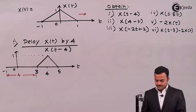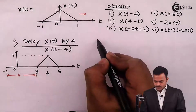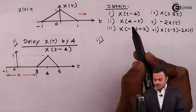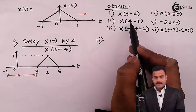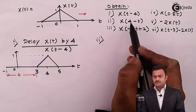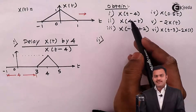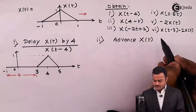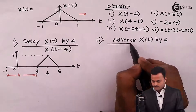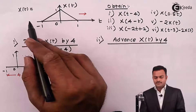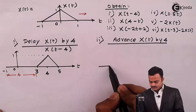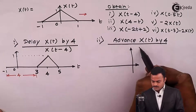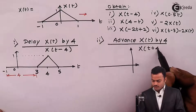Let's go to the next point where we want X of 4 minus t. Two operations need to be performed: one is time shifting and the second is time reversal. Remember the order — time shifting has topmost priority. So first, plus 4 is there. Plus 4 means it is an advancement. So we will advance X of t by 4 units. Advance means it will start earlier, giving us X of t plus 4.